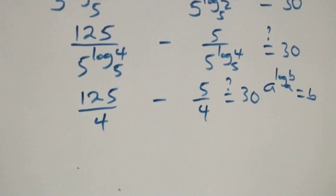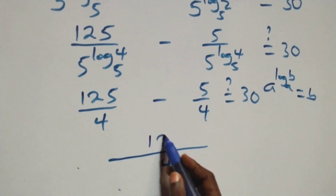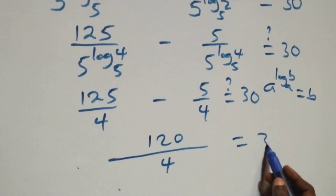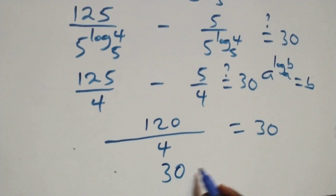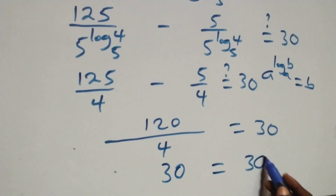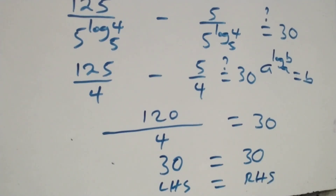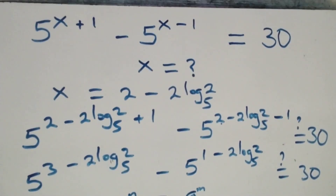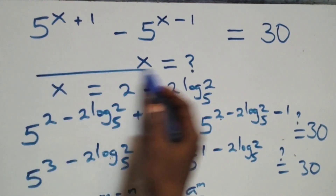Left-hand side equals the right-hand side. Therefore, we conclude that x equals 2 minus 2 log₅2 satisfies the given problem.